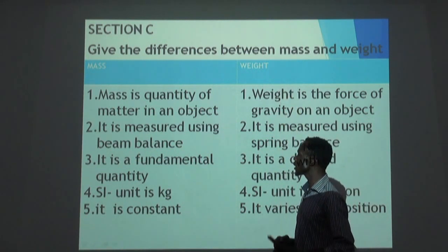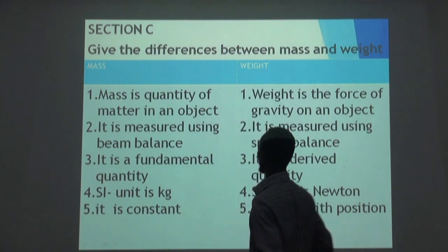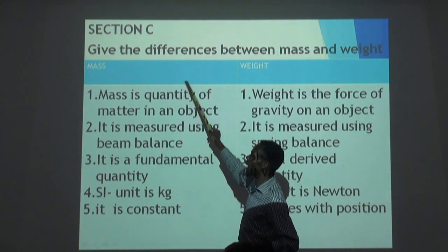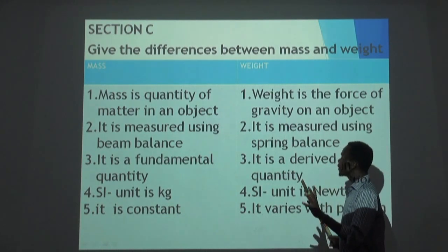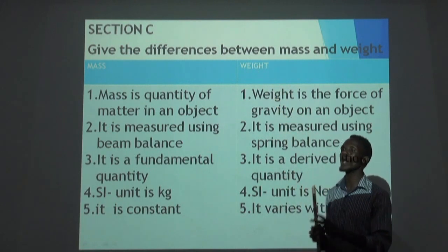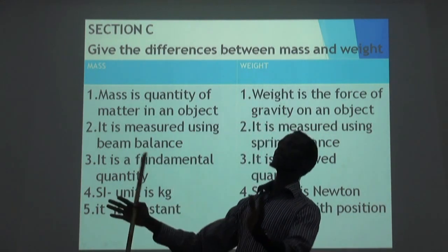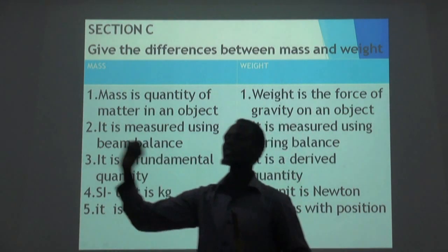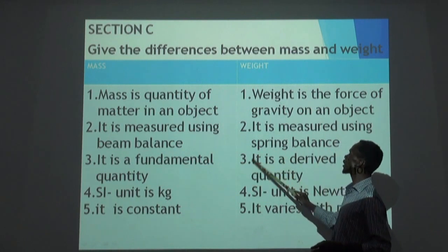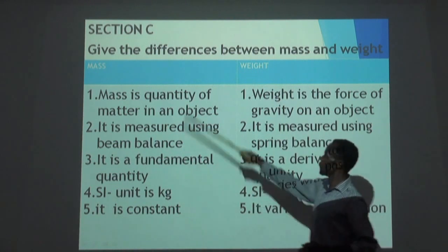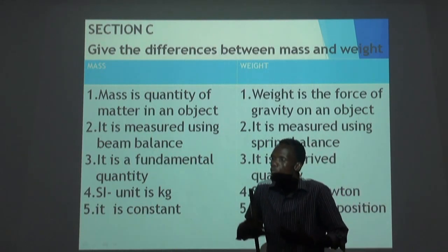The third difference is about the type of quantity. Mass is a fundamental quantity. Weight is a derived quantity — meaning in order to get weight, you must pass through calculation. Mass is directly obtained from the beam balance, that is why it is a fundamental quantity. It is one of the basic physical fundamental measurements. Weight requires calculation to obtain it.